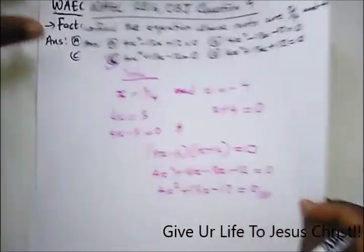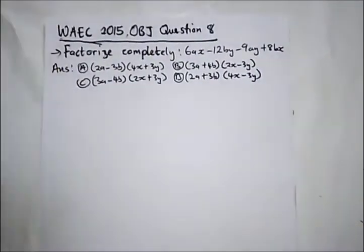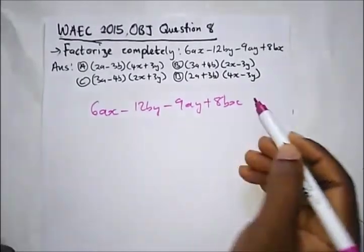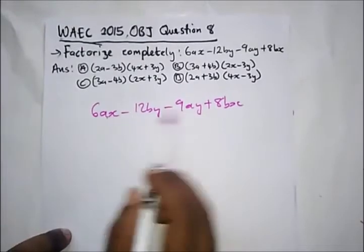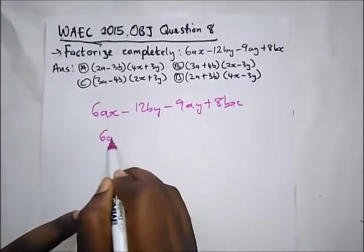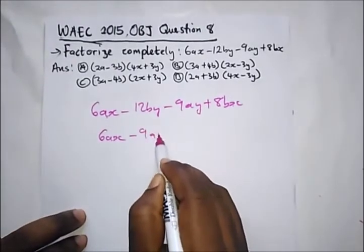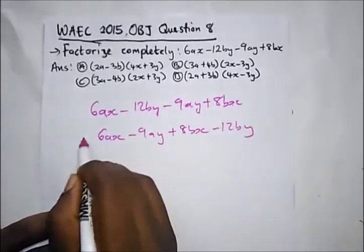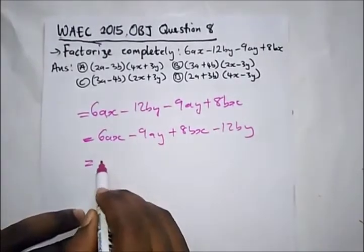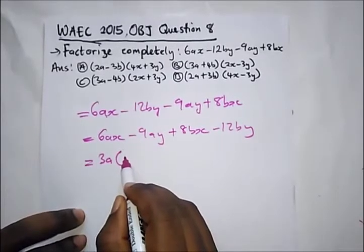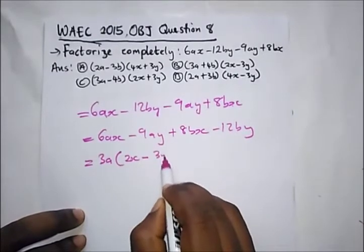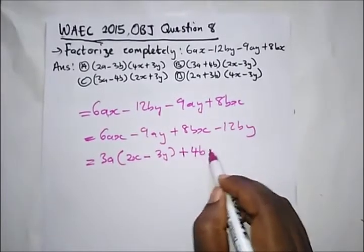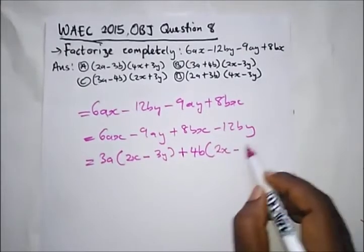Our second question says: factorize completely 6AX minus 12BY minus 9AY plus 8BX. All we need to do is take what is common. We group: 6AX minus 9AY, plus 8BX minus 12BY. From the first group, 3A is common, giving us 3A(2X minus 3Y). From the second group, 4B is common, giving us 4B(2X minus 3Y).